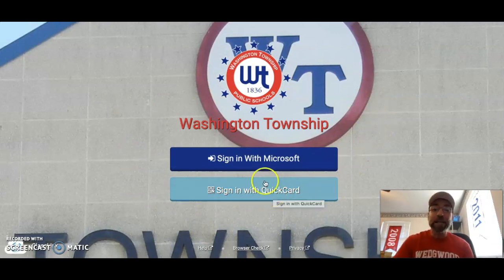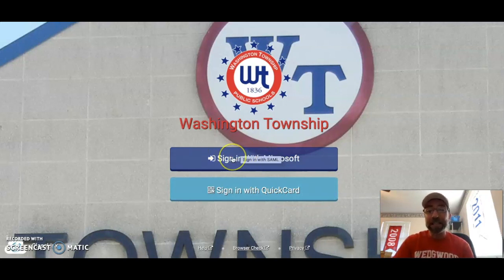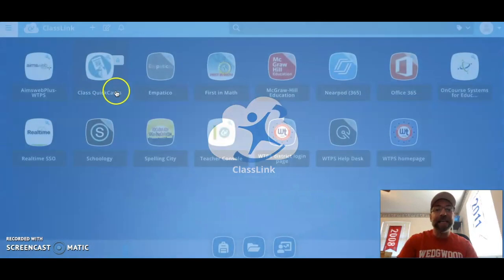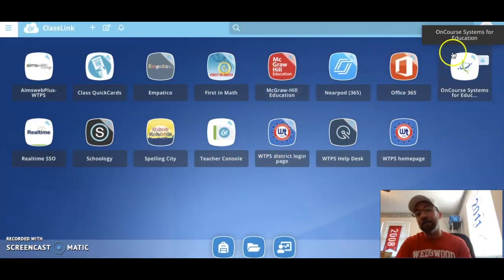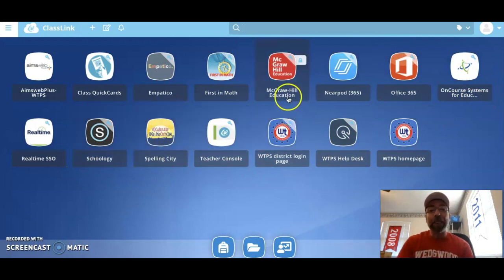Now as second graders, you signed in with your little quick card. Well, as a third grader, we're going to sign in with Microsoft. So you're going to click on sign in with Microsoft. And it's going to ask you for your school email and your lunch pin. Once I click on that, I put in my email and my lunch pin. It's going to take me to my class link account that has all of my amazing school apps. I want to click on the McGraw Hill Education app. That's the app that gets me into ConnectEd.